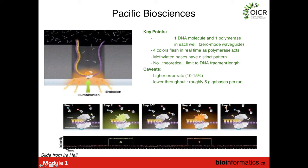Nucleotides are diffusing in and out of this chamber constantly, but when one actually gets captured by the DNA polymerase and incorporated, we see it as a pulse of light with a fairly long duration. Looking at the signal intensity of the four different colors over time, when we see a pulse of green light that means DNA polymerase has captured and incorporated a nucleotide over that period of time — based on the kinetics of the incorporation reaction. Then it drops back down, then jumps up again for the next T, goes back down, and carries on.